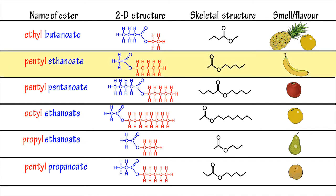pentylethanoate has a banana smell, pentylpentanoate an apple smell, octylethanoate an orange smell, propylethanoate a pear smell, and pentylpropanoate an apricot smell.